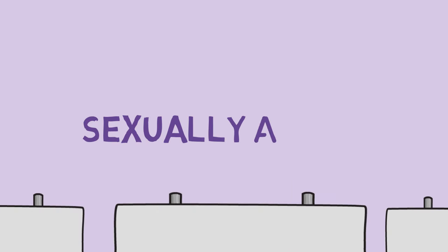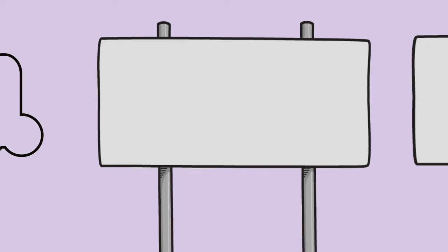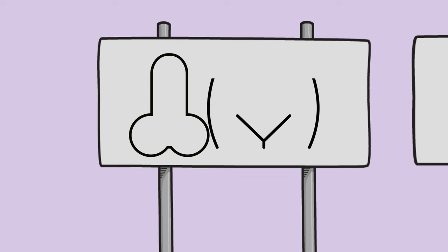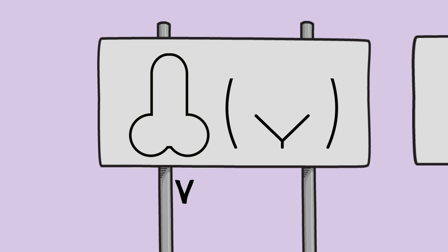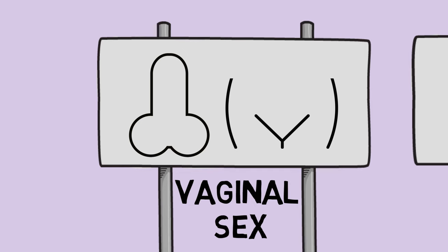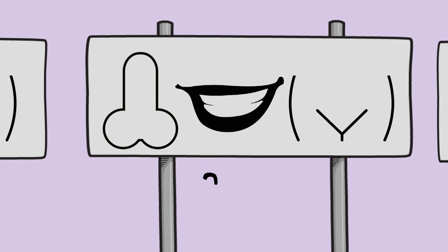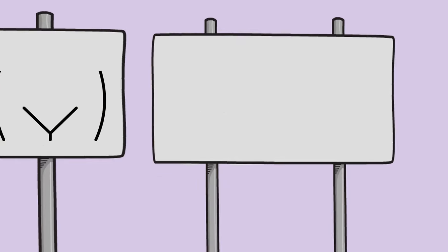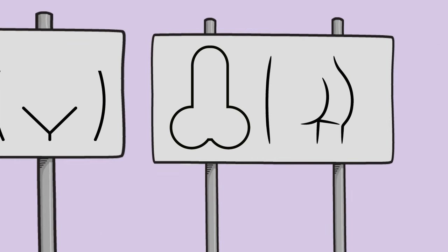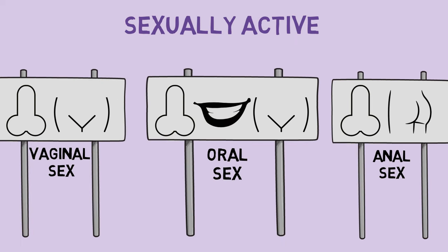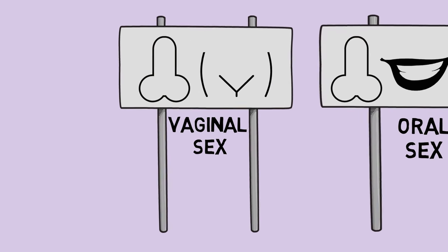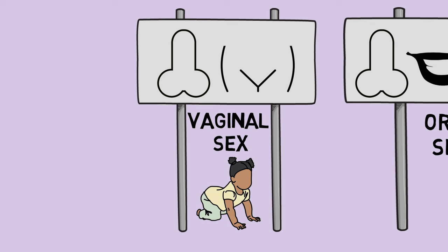So what does it mean to be sexually active? Some people think it only involves contact between the genitals — which is the penis for males and the vagina for females — and this is called vaginal sex. But being sexually active can also mean other things. It can involve contact between the mouth and genitals, commonly called oral sex, and can involve contact between the penis and anus, commonly called anal sex. If you do any of these, it counts as being sexually active. But only vaginal sex between a penis and vagina can lead to pregnancy and a baby.